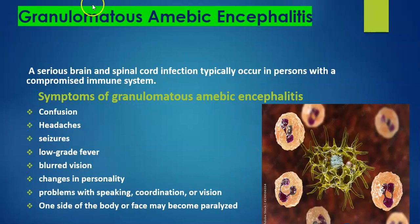Next, we see granulomatous amoebic encephalitis (GAE) — a serious brain and spinal cord infection that typically occurs in persons with a compromised immune system. The symptoms of GAE include confusion, headache, seizures, low-grade fever, blurred vision, change in personality, and problems with speaking or coordination.